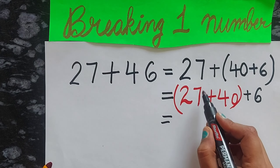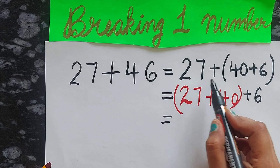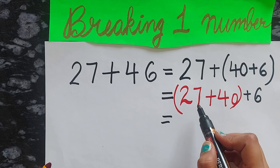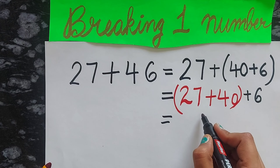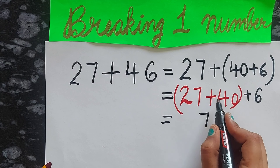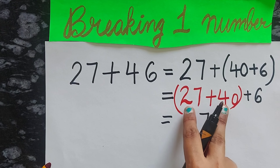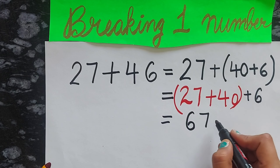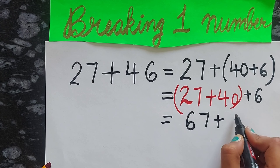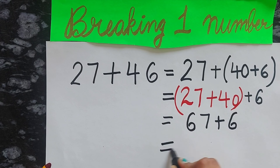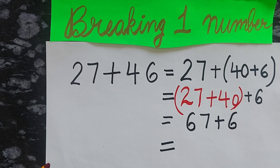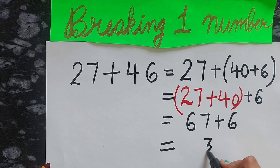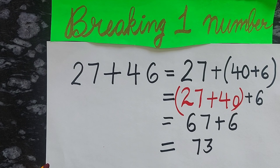Now how do we add? Firstly we will add the ones place: 7 plus 0 equals 7. Then we add the tens place: 4 plus 2 equals 6. Now add the 6 here. The answer is 73.